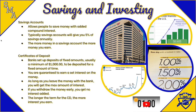A savings account allows you to save money with added compound interest. Compound interest is the interest on the total amount of money in the account. So if you earn five percent interest annually, that five percent gets added to your account at the end of the fiscal year, and then you get five percent on the new balance.